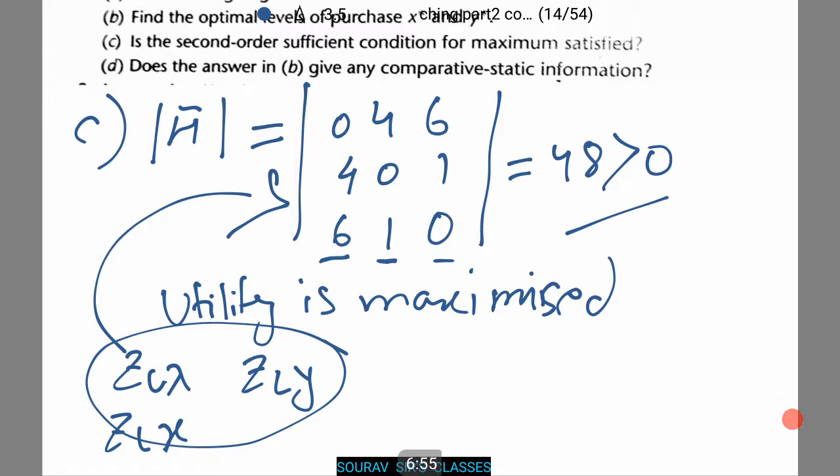Now let's see the last question. Does the answer in b give any comparative static information? No, because we only obtain the value of x star, y star, and lambda star. We do not have any equations or any such other information suggesting so. Thus the last answer will be no.